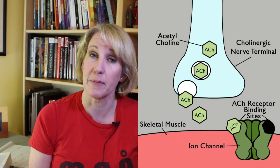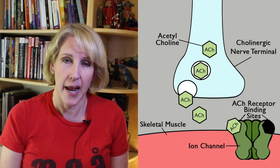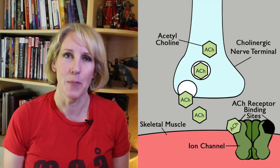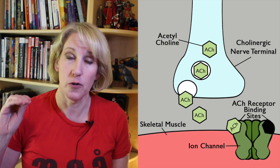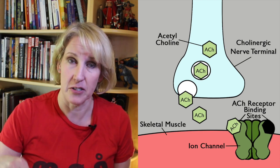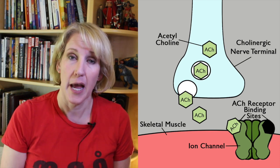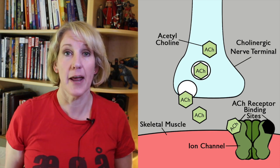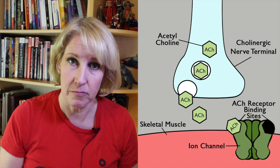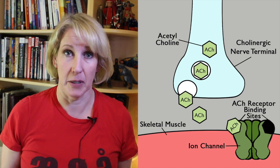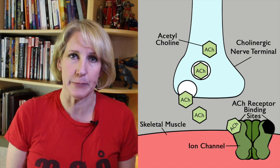Acetylcholine receptors sit on skeletal muscle. The way that your muscle contracts is that you have a nerve which goes to that muscle that releases a neurotransmitter called acetylcholine, and acetylcholine then binds the acetylcholine receptor, which then causes the skeletal muscle to contract through a variety of mechanisms.